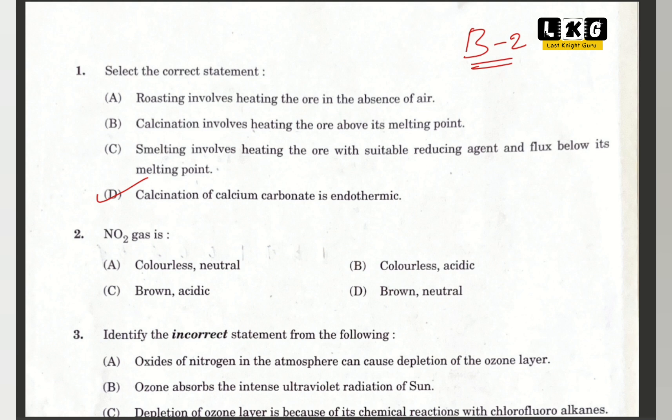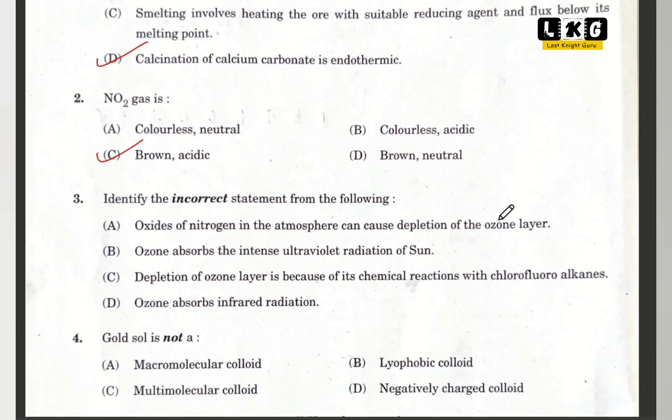Question number 2, option C is correct. NO2 gas is brown and acidic in nature. Question number 3: identify the incorrect statement. Option D — ozone absorbs infrared radiation — that is false. Question number 4, gold sol is not a macromolecular colloid. Option A is correct.